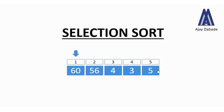In selection sort, we select the first position — that is number 60 — and then we try to find the smallest number among all these numbers. The number 3 is the smallest, so we swap number 3 with number 60. That is, we swap position 1 with position 4.